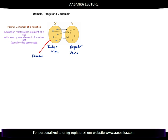On the right side, elements of x are related to particular elements of y. For example, one element is related to this, another element is related to this, and this element is related to this. Note that two elements from x can be related to one element on y, but the reverse is not possible if it has to remain a function.